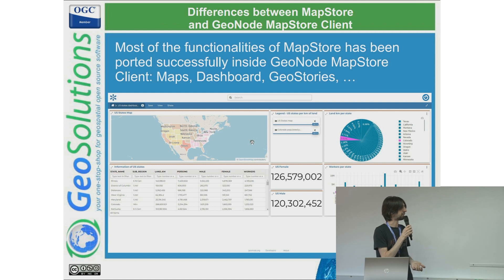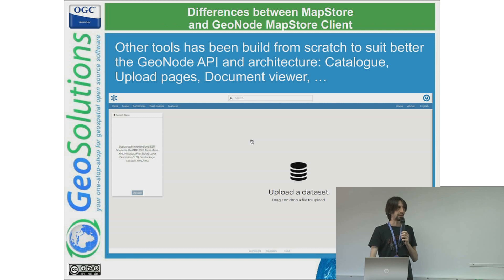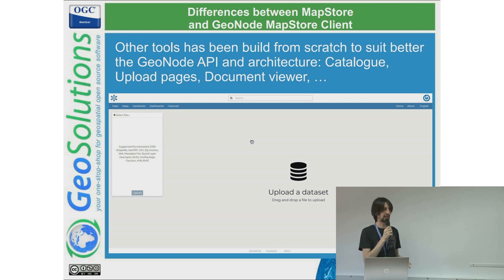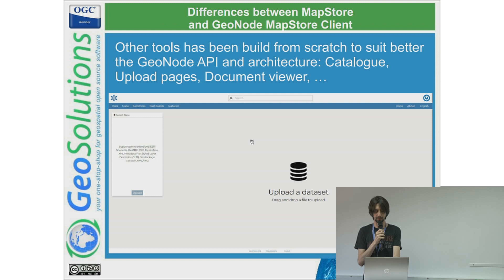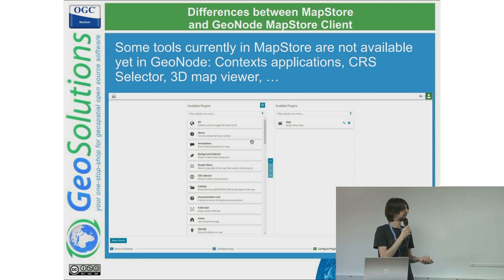Most of the functionality available in MapStore has been successfully ported to the GeoNode MapStore client, like maps, dashboards, and viewers. Other tools not available in MapStore have been implemented specifically for the GeoNode MapStore client — for example, the upload pages, the document viewer, and the catalog. However, some tools are not currently available, such as the context application for composing the map viewer, the style selector, and 3D maps inside GeoNode.